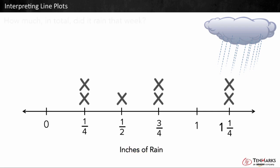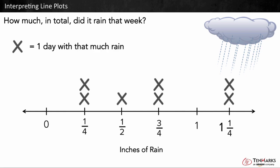A weatherman tracks the amount of rain that fell for one week in February. The line plot displays the data. How much in total did it rain that week? For this line plot, the fractions below represent the inches of rain that fell. Each x above a number represents one day with that much rain.